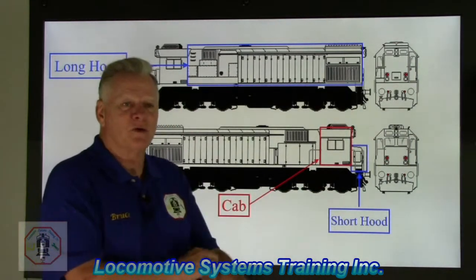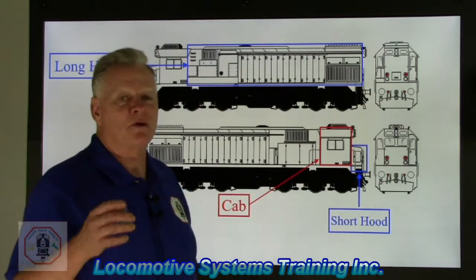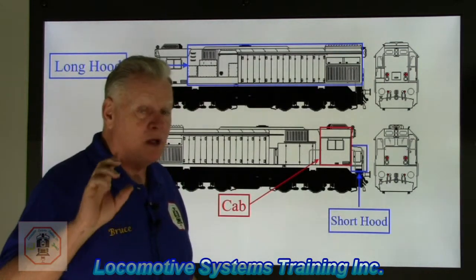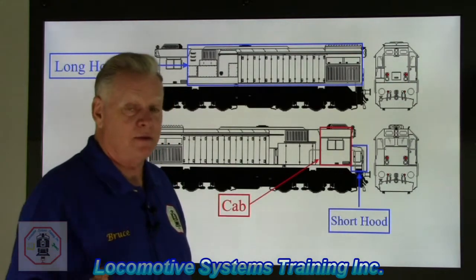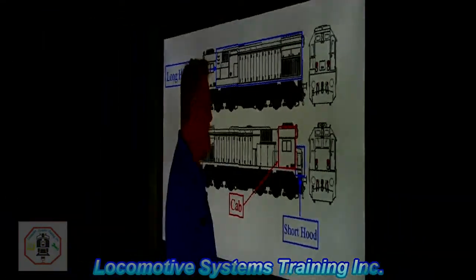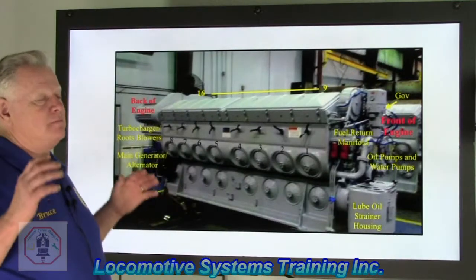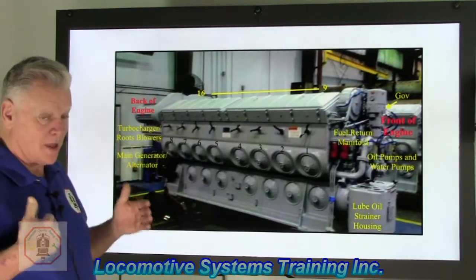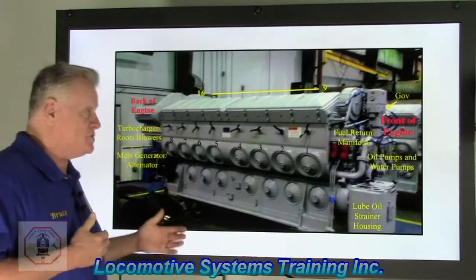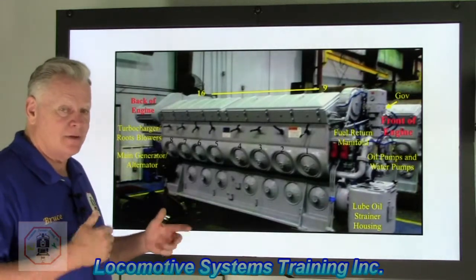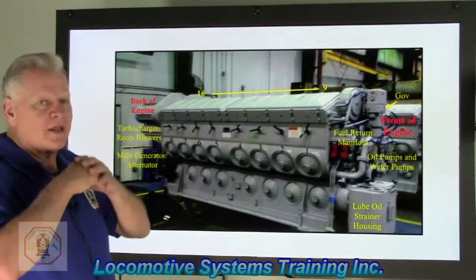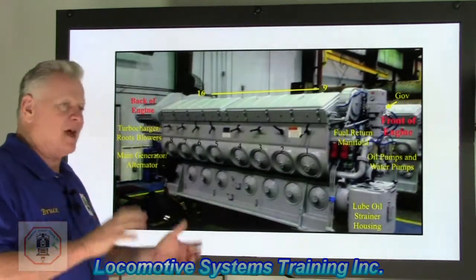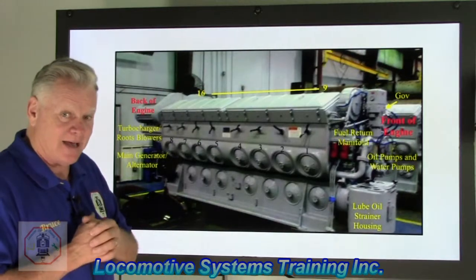Now, most locomotives run the letter F forward at the short hood end, but some do run long hood forward, so you've got to be aware of that. Remember, the car body orientation is determined by the letter F. The engine is not. We've got to establish landmarks, left and right, front and rear for the engine, and then dial that in to the car body.